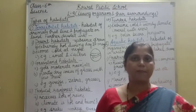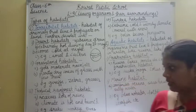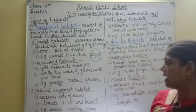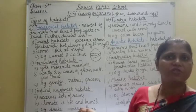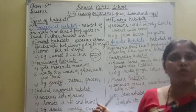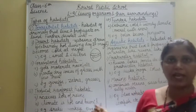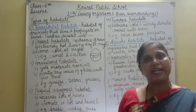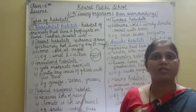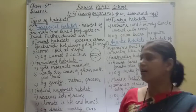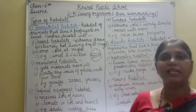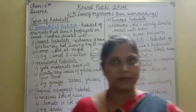Tropical rainforest habitat में बहुत ज़्यादा animals रहते हैं क्योंकि यहां का atmosphere बहुत सारे animals को survive करने में help करता है. Examples: snakes, monkeys, trees — variety of animals, insects, वो इस habitat में survive करते हैं.